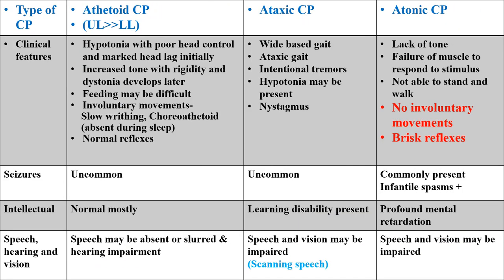In athetoid CP, upper limb involvement is more than lower limb. Initially the patient has hypotonia with poor head control and marked head lag. Later, hypertonia with spasticity and dystonia develops. Always remember: if a patient has hypotonia initially and later develops hypertonia, this can be CP. But the reverse is not true — if a patient has hypertonia initially and later develops hypotonia, this is not CP and another etiology must be sought.